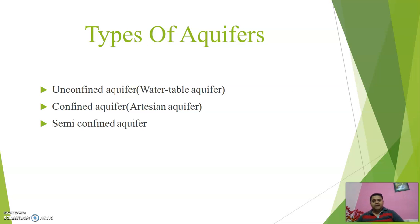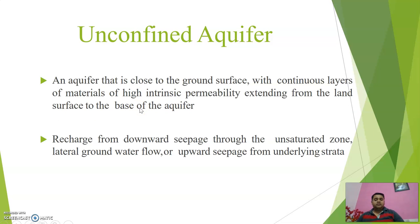Types of aquifers: unconfined aquifer and confined aquifer. In between there is a semi-confined aquifer but it is of less importance. The two main aquifers are the unconfined aquifer, also known as the water table aquifer, and the confined aquifer, also known as the artesian aquifer. An unconfined aquifer is close to the ground surface with continuous layers of material of high intrinsic permeability extending from the land surface to the base of the aquifer.